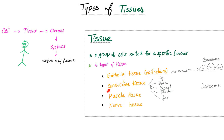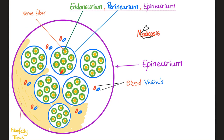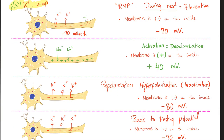The nerve is supported by connective tissue. Each nerve fiber is surrounded by endoneurium; a bundle of fibers is surrounded by perineurium; and the entire nerve is wrapped by epineurium. Endo means inside — wrapping a single axon; perineurium wraps a bundle; epineurium wraps everything.